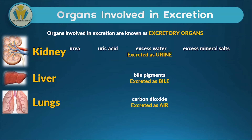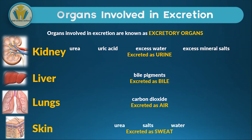The next organ which completes our list is the skin. You might already be able to guess what the skin excretes. What's contained in sweat is urea, salts, and water, which is excreted as sweat.